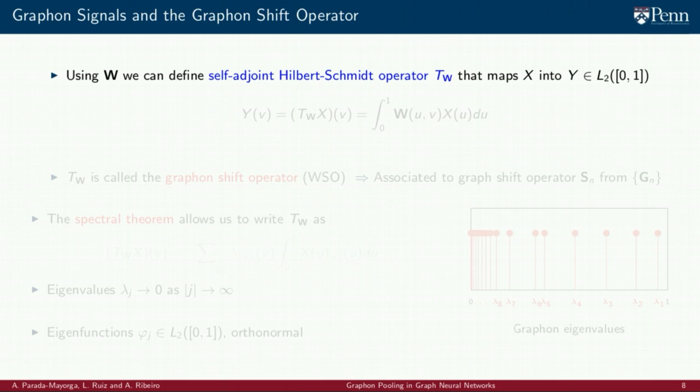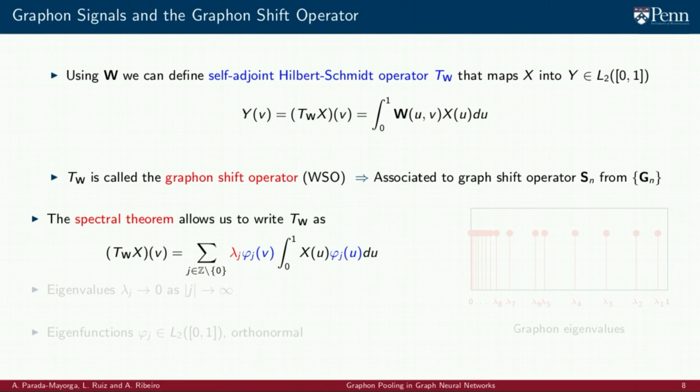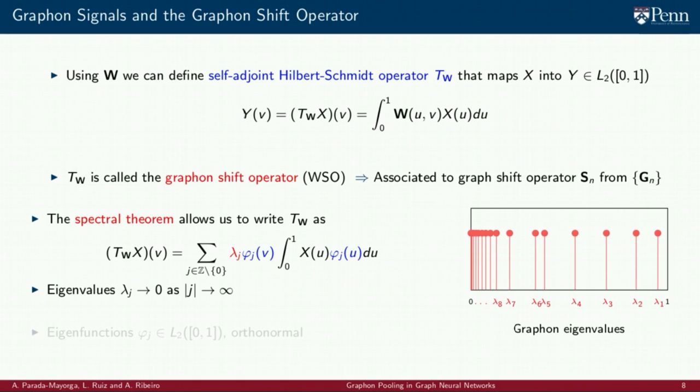The graphon induces a shift operator that maps a square integrable function x on L2 into Y, again in the space L2 by means of an integral operator defined as the integral in the interval 0 to 1 of the product between the graphon function W and the signal x. And using the spectral theorem, we can write the action of the graphon shift operator on the signal x as a sum expression in terms of its eigenvalues lambda sub j and its eigenvectors phi sub j.